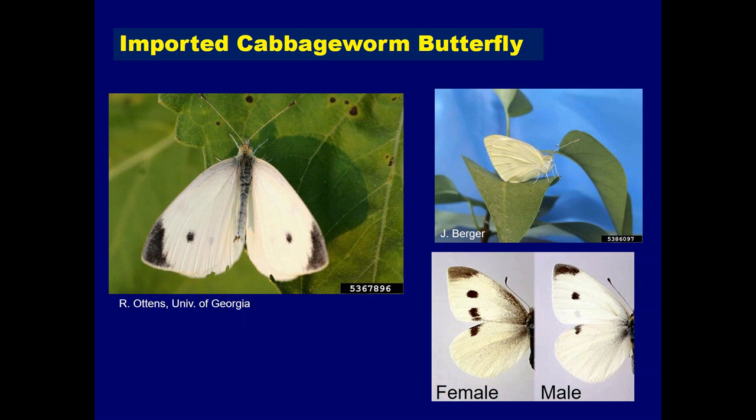An important point: you may observe differences between females and males. The female butterfly has a couple of additional spots on the first pair of wings compared to males. You can see this nicely in the lower right corner of the slide, where two adults appear next to each other.